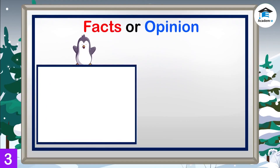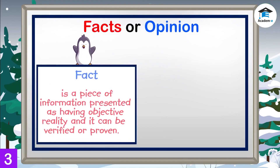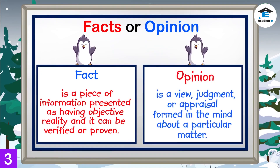According to the Merriam-Webster Dictionary, a fact is a piece of information presented as having objective reality, and it can be verified or proven. On the other hand, an opinion is a view, judgment, or appraisal formed in the mind about a particular matter. It relates to how someone feels about something. Others may agree or disagree with an opinion, but they cannot prove or disprove it.